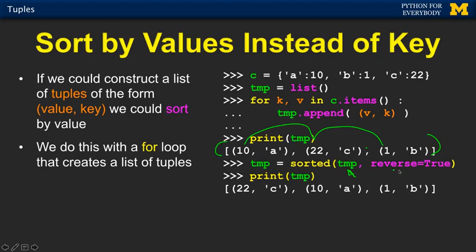And then we print this out — so it's now 22, 10, 1 — from big value to small. So that's how you get a sort by value instead of by key. But we have to make a temporary list, so temp is a list because we have to append to it, but each of the things in the list is a tuple. So we end up with a list of tuples.